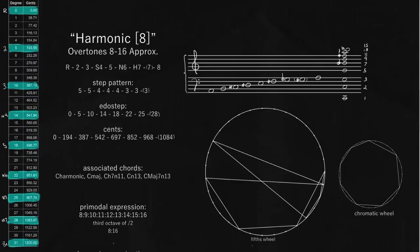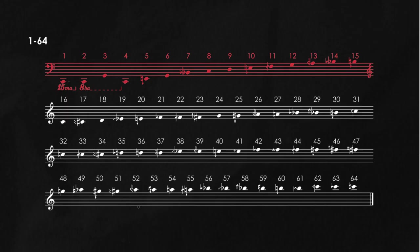Today, we are going to be talking about the overtone scale in 31 Equal. This is a scale which is an approximation of overtones 8 to 16 from the harmonic series. So we could call this harmonic 8, indicating it's an 8-note scale based on the harmonic series.